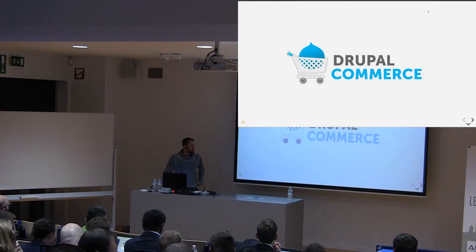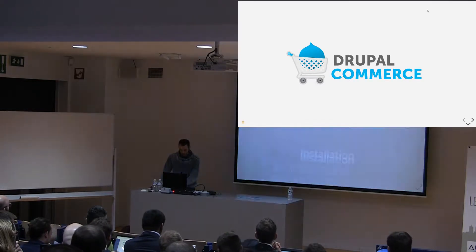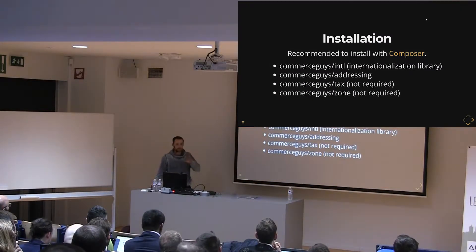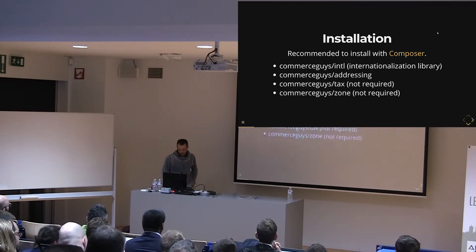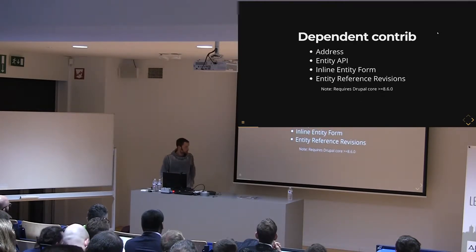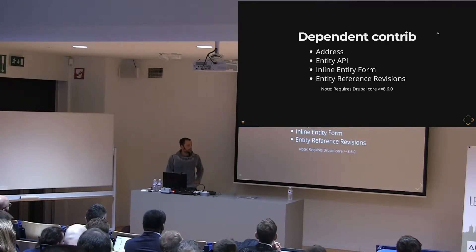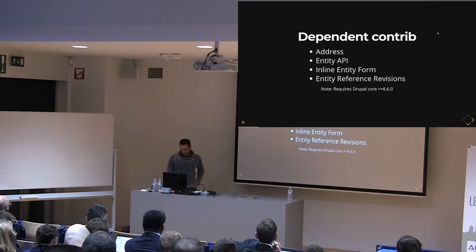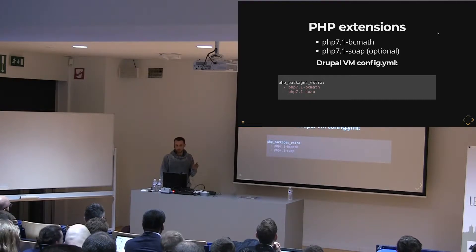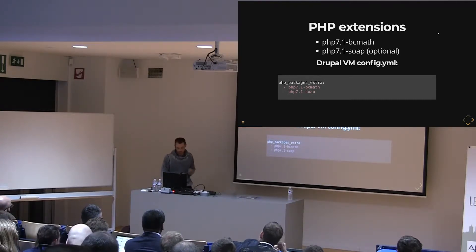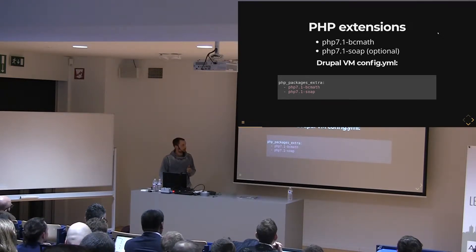First topic is some general Drupal Commerce 8.x info. It is recommended — like every other module — that you install it with Composer because it has dependencies to external libraries, all made by commerce guys, and other contrib modules which are needed for the address field, the inline entity form for product variations, and to store revisions. Also, the latest version of commerce requires you to run Drupal 8.6. It has one required dependency: if you enable the price module, you'll need the PHP extension BCMATH.